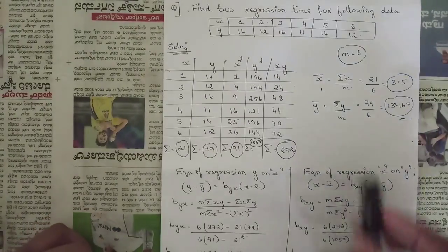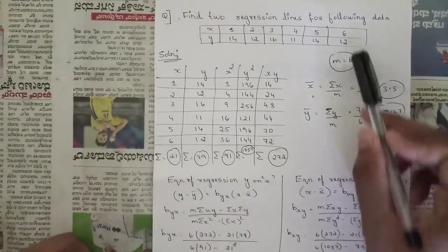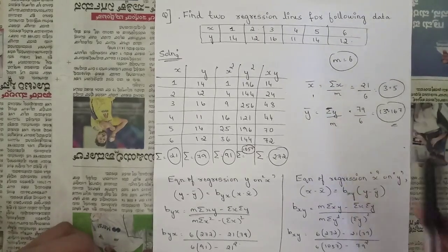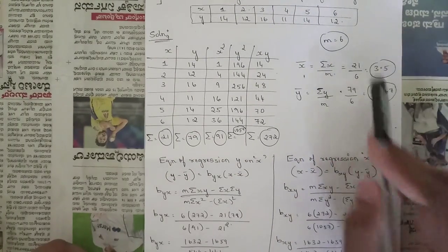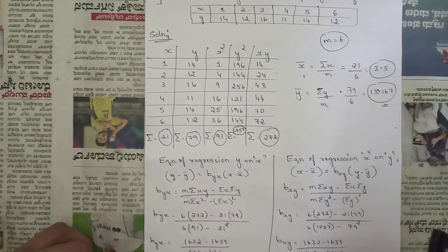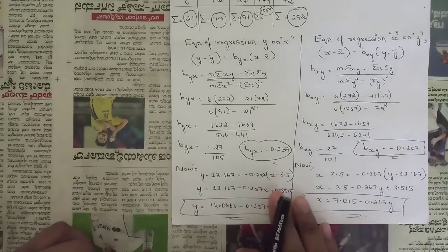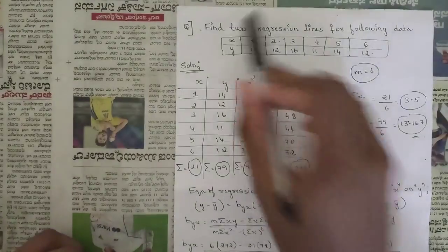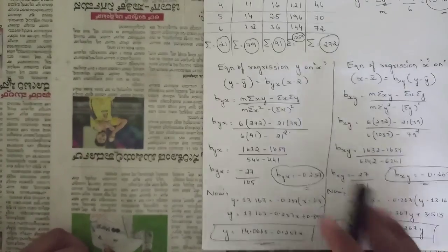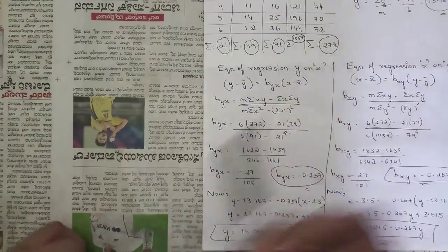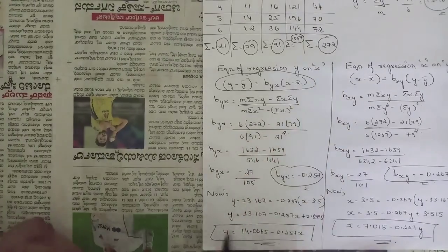Calculate x̄ = Σx/n = 21/6 = 3.5 and ȳ = Σy/n = 79/6 = 13.167. Now we find the two regression lines. The first is regression of y on x, with general formula: y − ȳ = b_yx · (x − x̄). We need to find b_yx first.